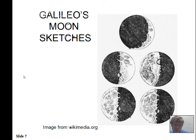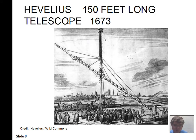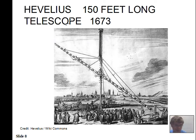Galileo used his telescope to make very good observations. When he sketched the Moon, he found it had valleys, mountains, and craters — not a smooth, uniform surface. Moving forward to 1673, telescope designs got rather wild — 150-foot-long cables and a pole, very unwieldy to move, but providing good color correction through the long focal length and good magnification.